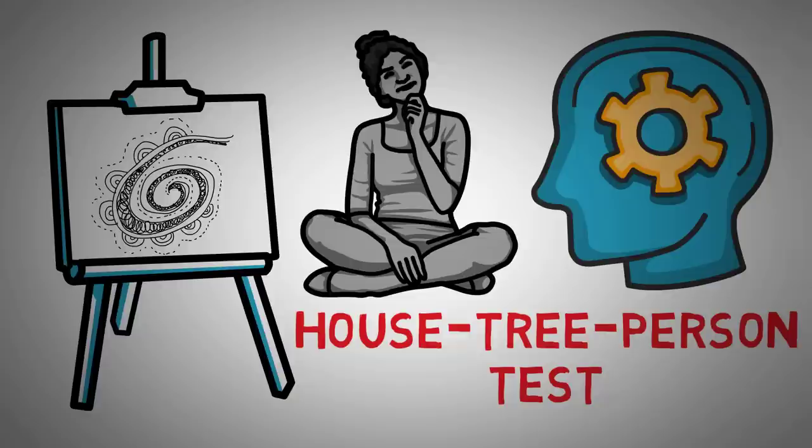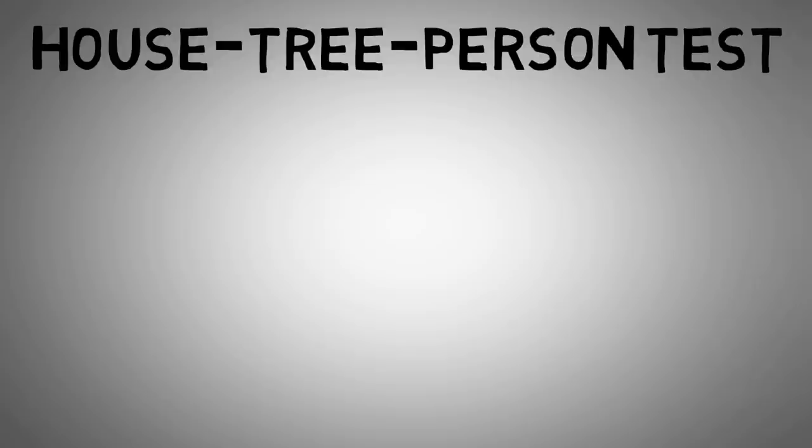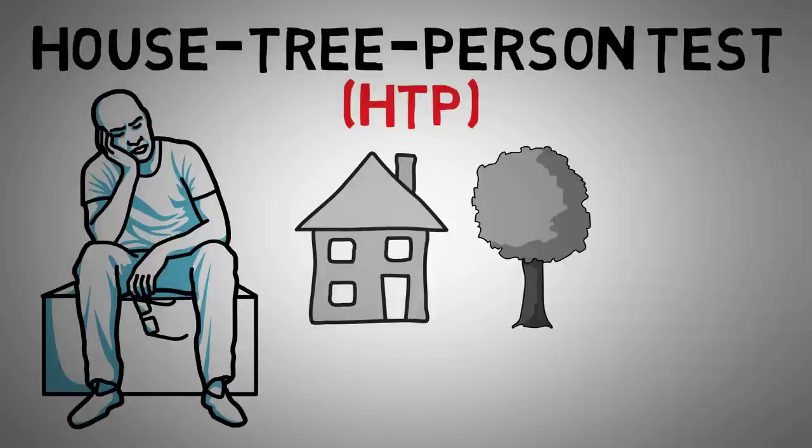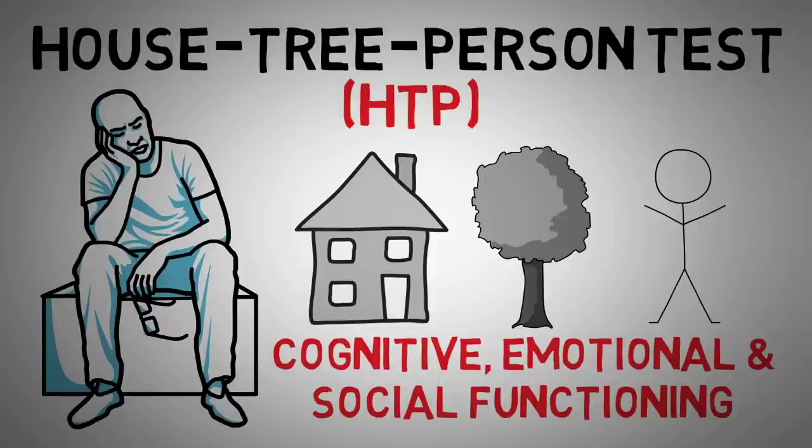So first off, what is the House Tree Person Test? The House Tree Person Test, also known as the HTP, is a projective test intended to measure different aspects of personality. Test-takers are asked to draw a house, a tree, and a person, and the interpretation of these drawings is used to create a picture of a person's cognitive, emotional, and social functioning.